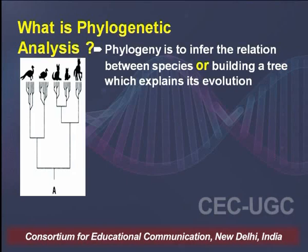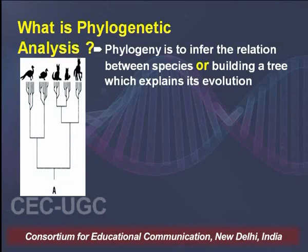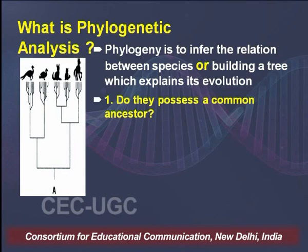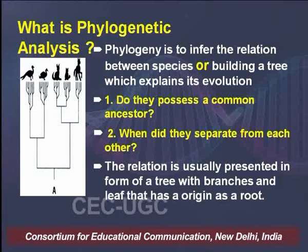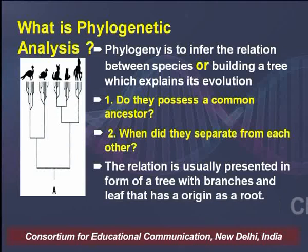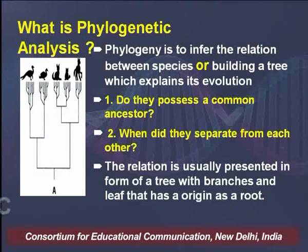Phylogenetic analysis is to infer the relation between species, building a tree which explains its origin, its evolution, and present state. We try to find out whether they have a common ancestor or when they separated from each other. The relation is usually presented in the form of a tree with branches and leaves — the origin as a root, the root denotes its origin, the branches show the path of evolution, and the final leaf shows the present state.